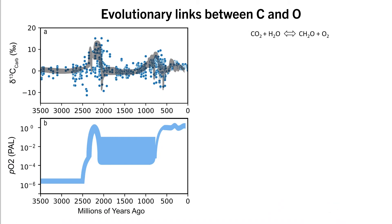In these two figures, I'm showing the delta-13C of marine carbonates and atmospheric oxygen levels for the last 3.5 billion years. Delta-13C is essentially the ratio of carbon-13 to carbon-12, with more carbon-13 resulting in higher delta-13C.